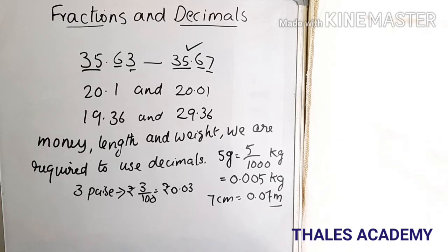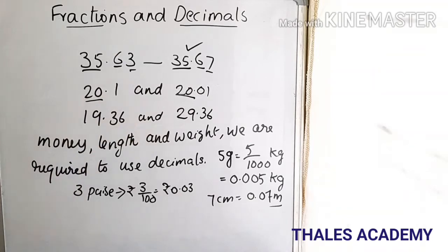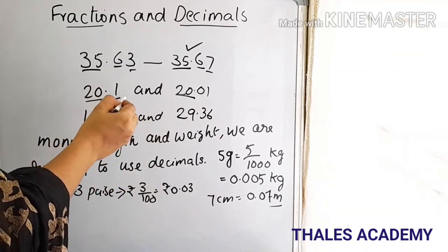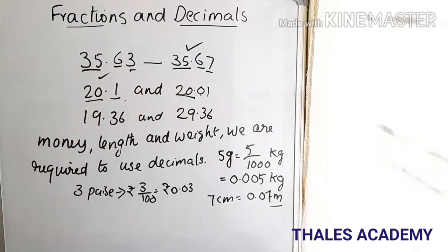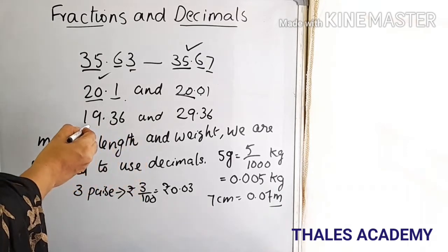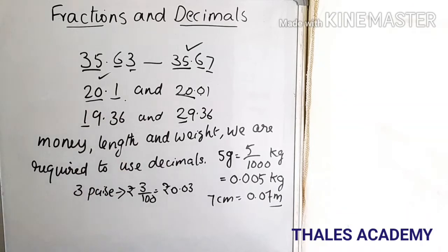Next, compare 20.1 and 20.01. The digits on the left of the decimal point are the same. On the right, the tenths digit is 1 and 0 respectively, so 20.1 is greater. Next, compare 19.36 and 29.36. Here the digits left of the decimal point are different — 1 is less than 2 — so 29.36 is the greatest number.